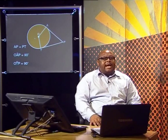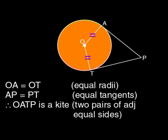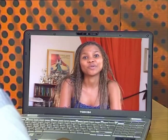For OATP to be a kite, you need two pairs of adjacent equal sides. We have that already. OA equals OT equal radii and AP equals TP as they are tangents to the same point P outside the circle. So they are equal as well. That was much easier than I thought it would be.